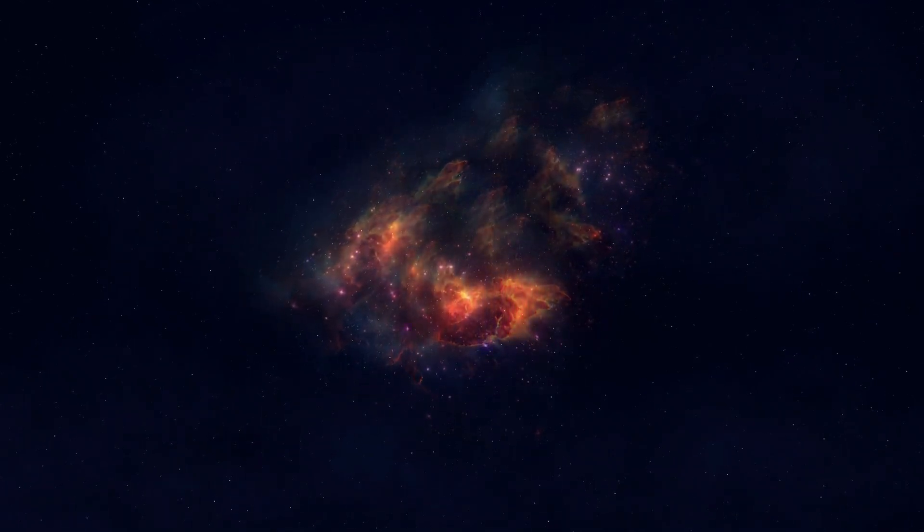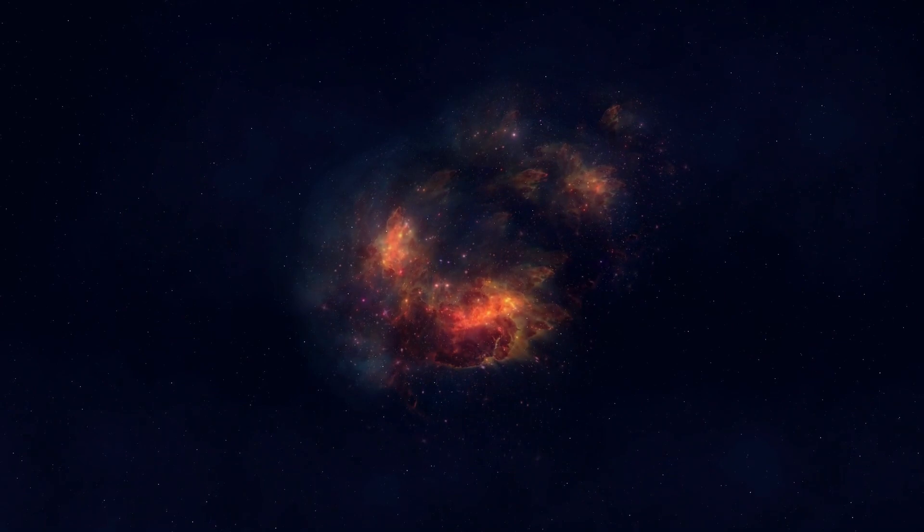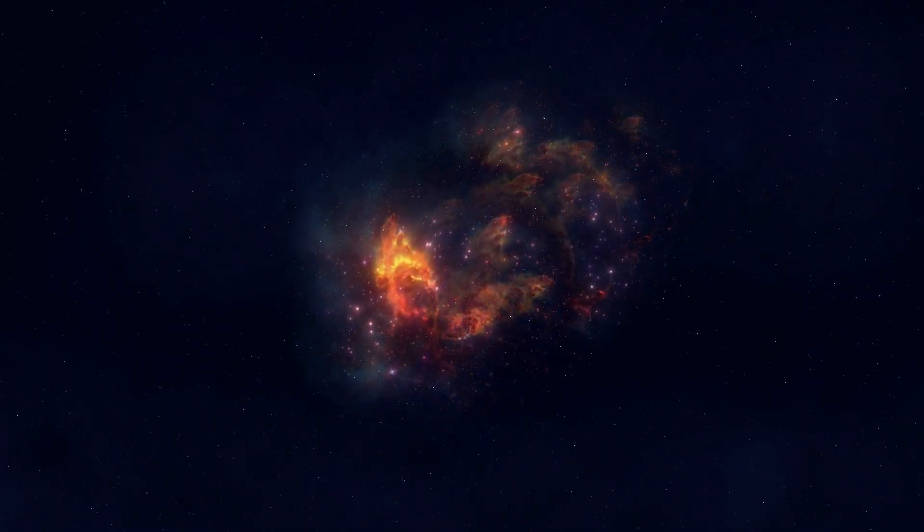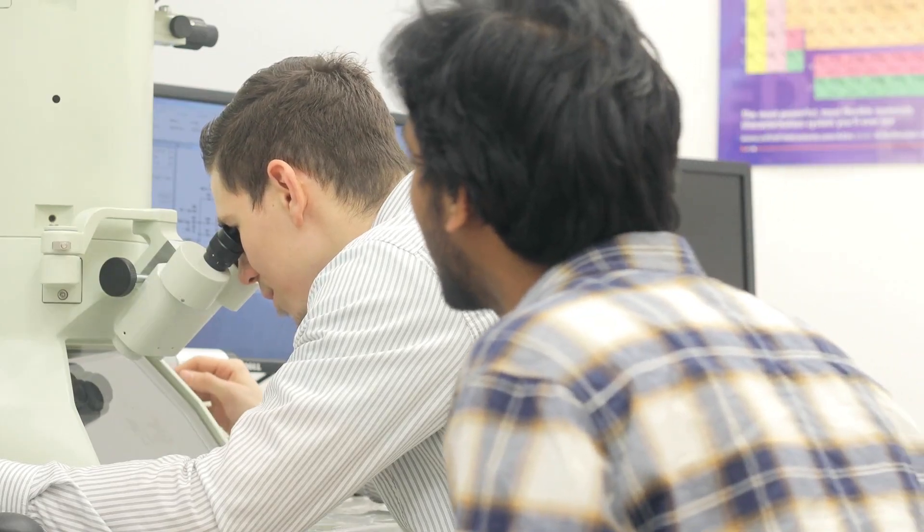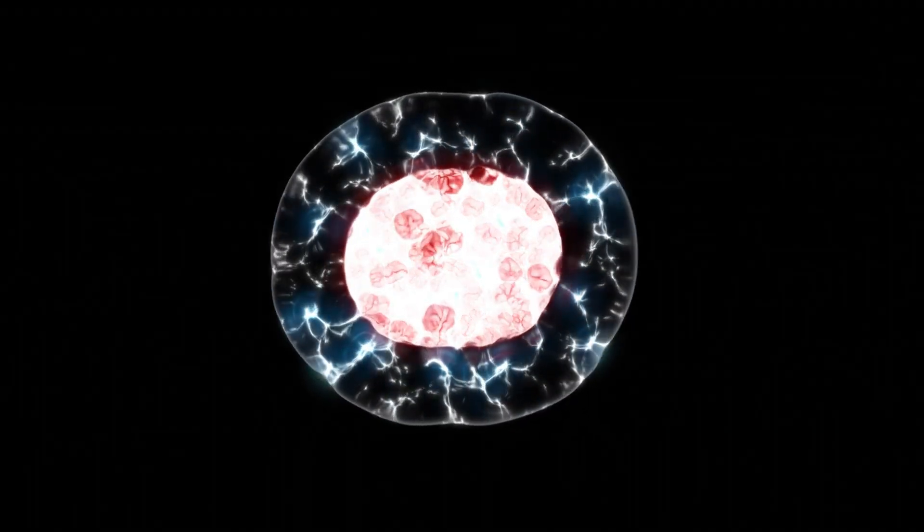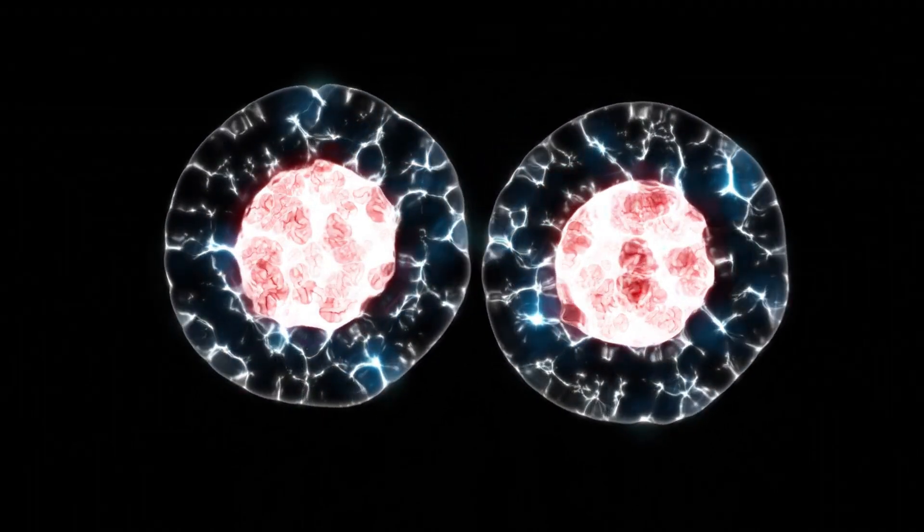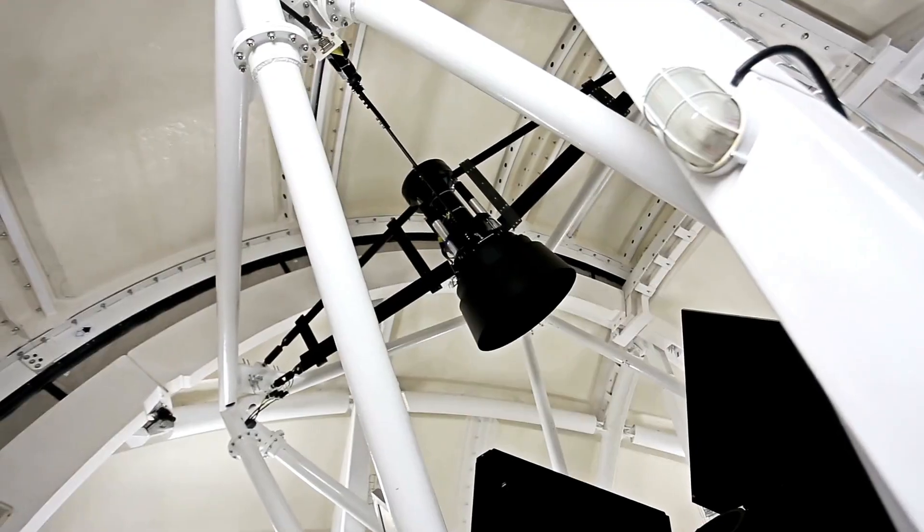The James Webb Space Telescope captured something that wasn't supposed to be possible during a routine scan of the Abel 2744 Galaxy Cluster, what scientists call Pandora's Cluster. JWST's infrared camera picked up a structured anomaly, buried in the background radiation. A flicker, yes, but not random, not chaotic.